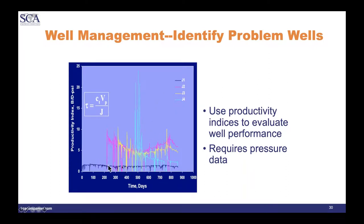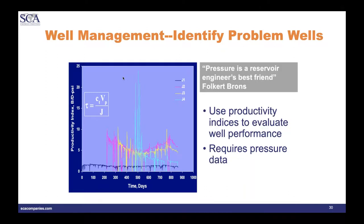Here are the time constant results for three wells — they're all different. One is poor, one comes in late and erratically. You can actually see the progression of the wells, and others have used this to schedule workover treatments. As an old UT professor noted, 'pressure is a reservoir engineer's best friend.'